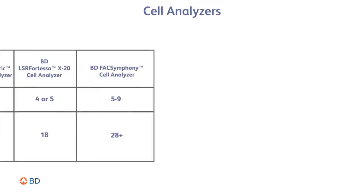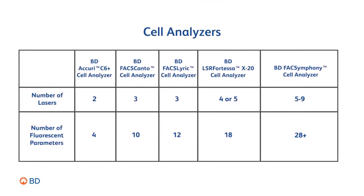Understanding your cytometer's capabilities is essential to panel design. You need to know which instrument you plan to use to ensure that your cytometer has enough detectors to analyze all of your markers. For example, this analyzer contains up to five lasers and can detect up to 18 fluorochromes.